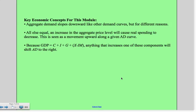Key economic concepts for this module. First, aggregate demand slopes downward like other demand curves, but for different reasons. Think aggregate price levels. Second, all else equal, the increase in the aggregate price level causes real spending to decrease. This is seen as a movement upward along a given aggregate demand curve. Third, because GDP equals all of those spending components, anything that increases one of those components will shift the aggregate demand curve to the right. Conversely, anything that decreases one of those components will tend to shift aggregate demand to the left.